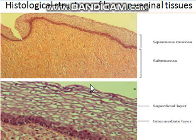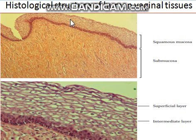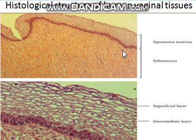A normal human vagina is covered with a squamous mucosa. The uppermost layer is the squamous mucosa, which lines the human vagina and is composed of stratified squamous epithelial tissue. Just below the squamous mucosa is the submucosa layer, which contains an abundance of connective tissue and capillaries.